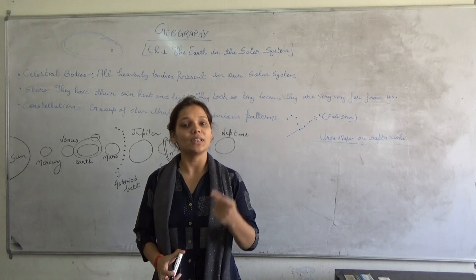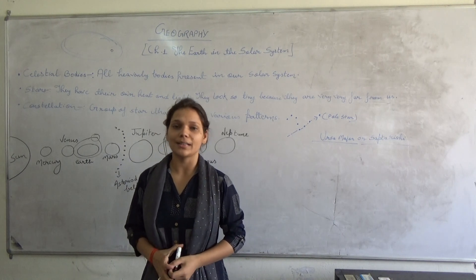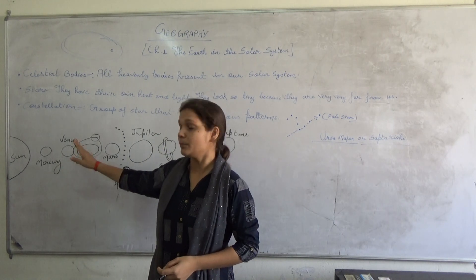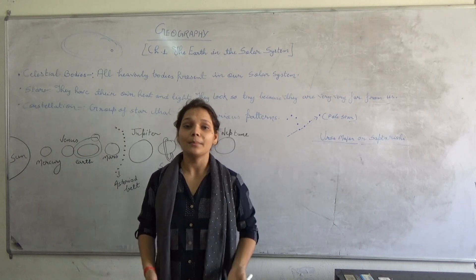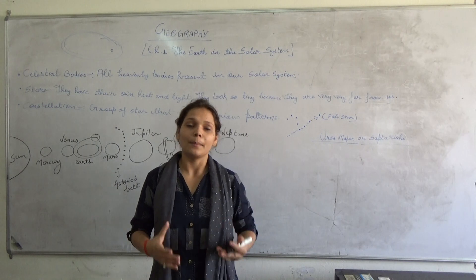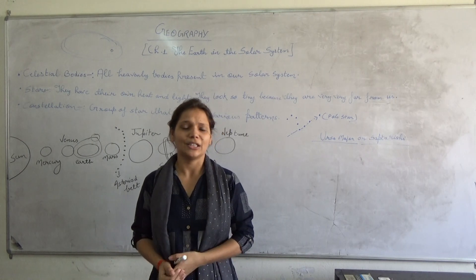Satellite can be of two types. One is artificial and another one is natural. Earth, moon is the only natural satellite of the Earth. And man-made satellites are made by humans. For example INSAT, EDUSAT, etc.